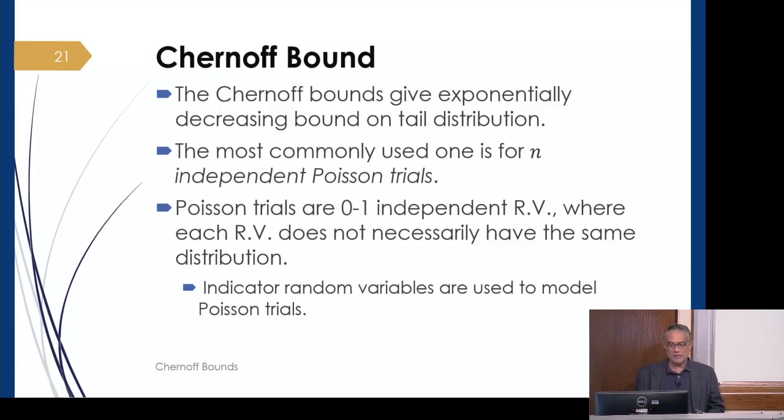But now we allow probabilities to change with the index of the random variable, so it's a more general statement. To do that, we have this concept modeled through something called a Poisson trial. These are informally 0-1 independent random variables where each random variable does not necessarily have the same distribution. Indicator random variables will be used to model these Poisson trials.